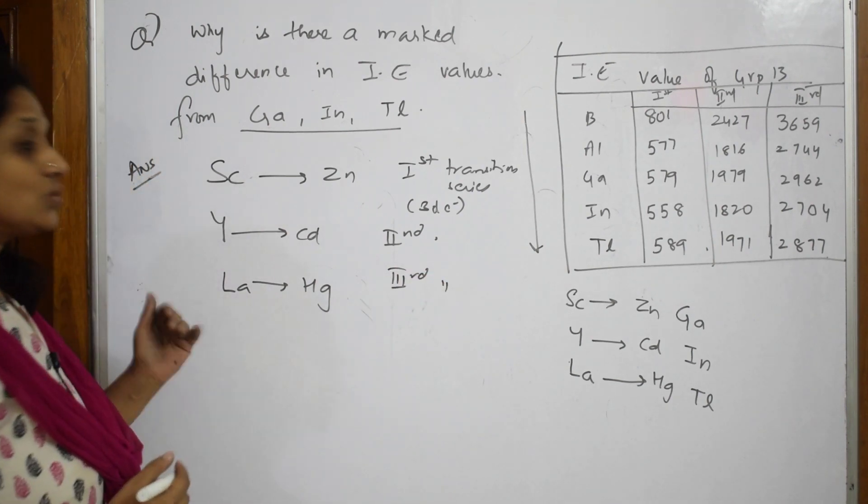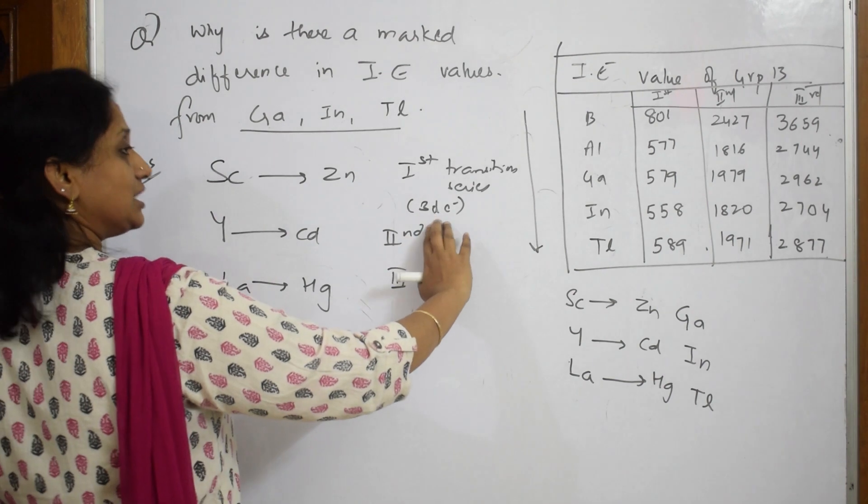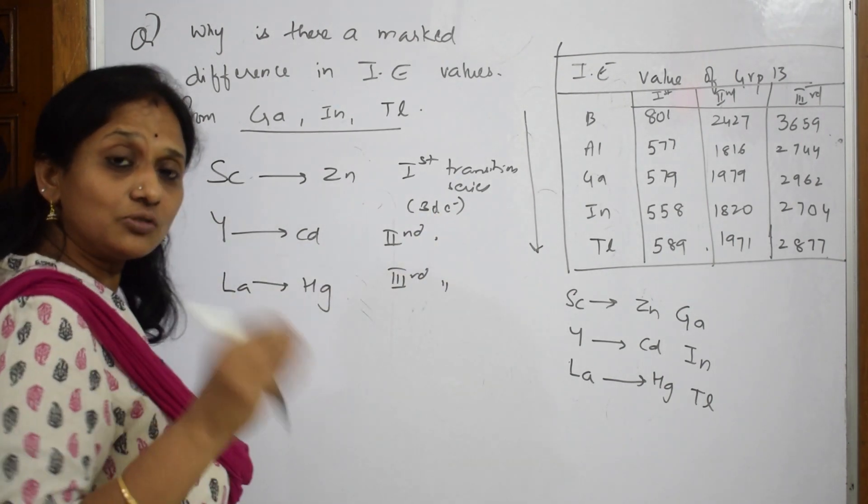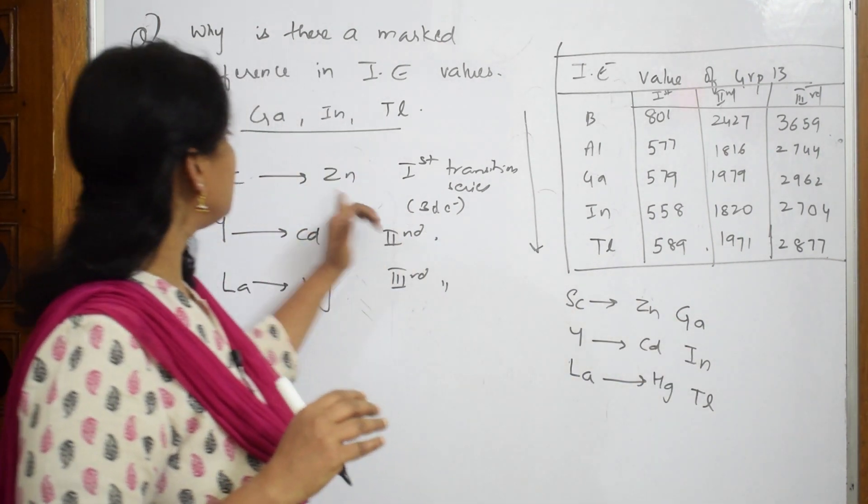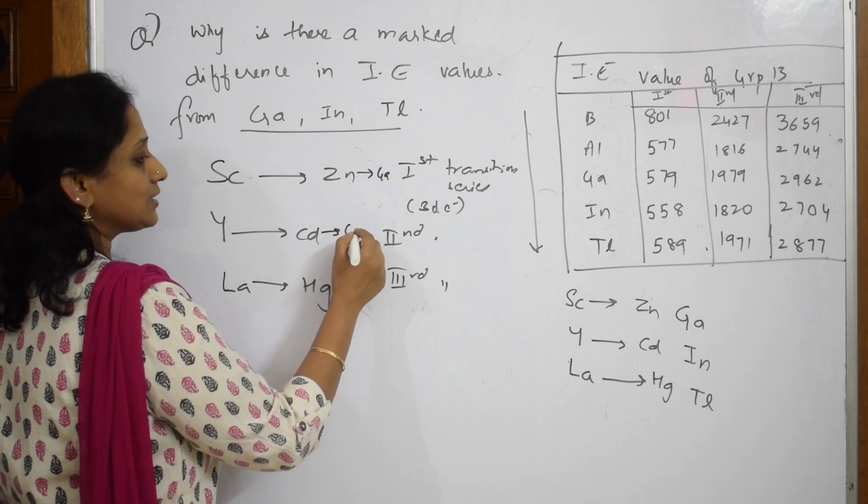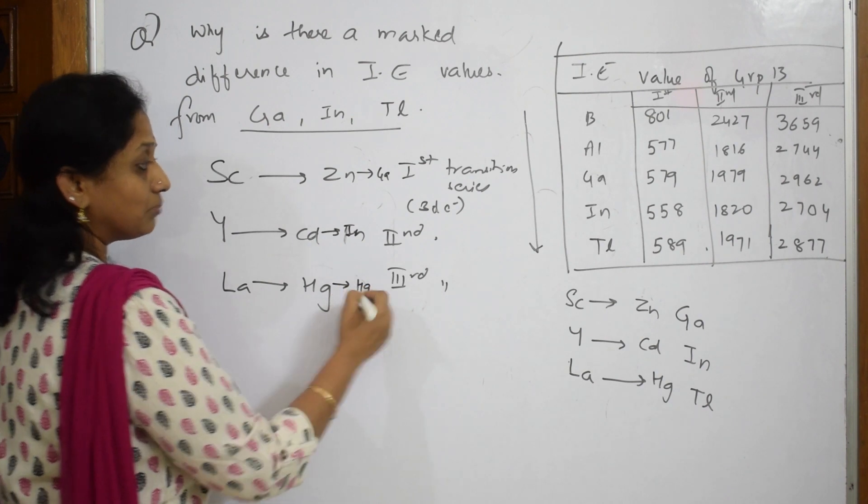Now what's happening here? Every time there is an addition of electrons in the 3d subshell. The effect of this is observed in Gallium, which is immediately after Zinc. In Gallium here, in Indium here you have Mercury.